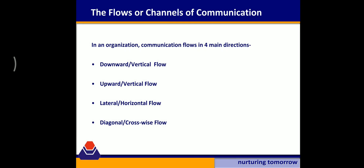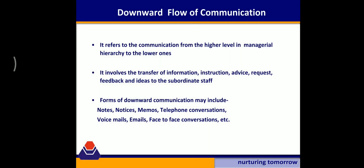In any organization we can see various channels or flows of communication. Here we are discussing four basic formal flows: first, downward flow of communication; second, upward flow of communication; third, horizontal flow of communication; and the last, diagonal flow of communication. Let us understand each flow in detail.